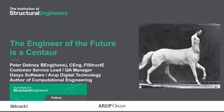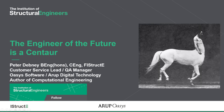Peter joined Arup in 2001 as a Senior Structural Engineer and then transferred to the Oasis Group in 2005. He's now Product Manager for the Structural Software Suite and Application Specialist for the Mass Motion Pedestrian Simulator. Peter has published a book called Computational Engineering for the IStructE and published several papers and journal articles covering a wide range of engineering topics, including network theory, structural vibrations, non-linear analysis, optimization and artificial intelligence.